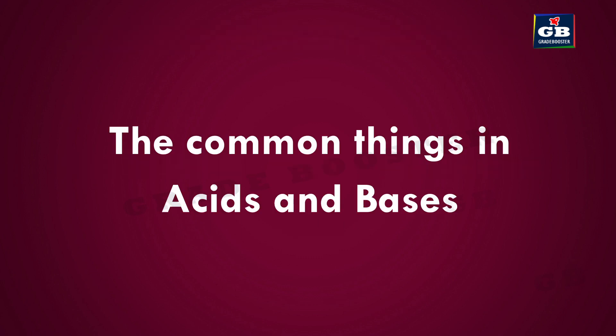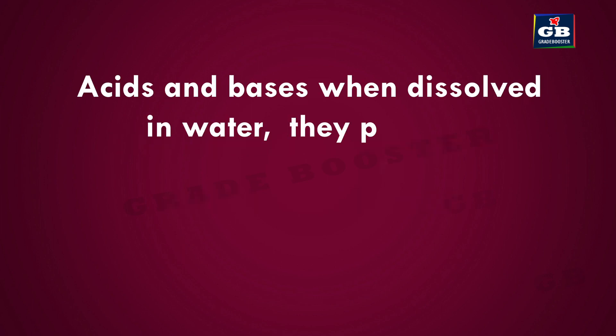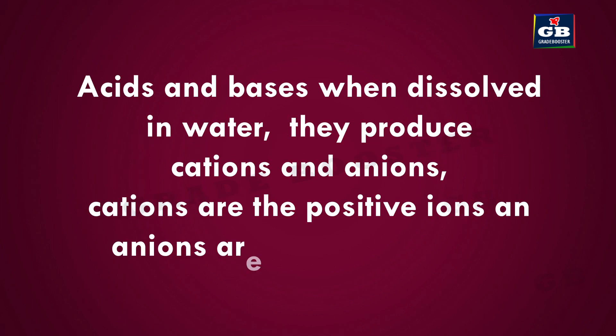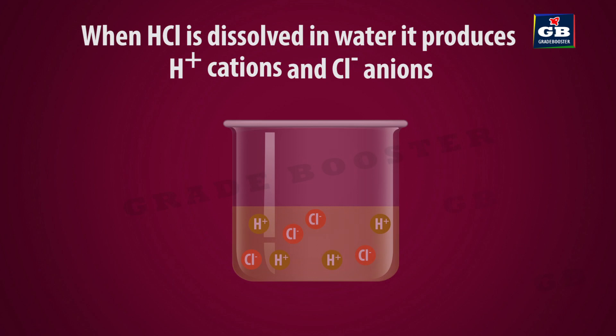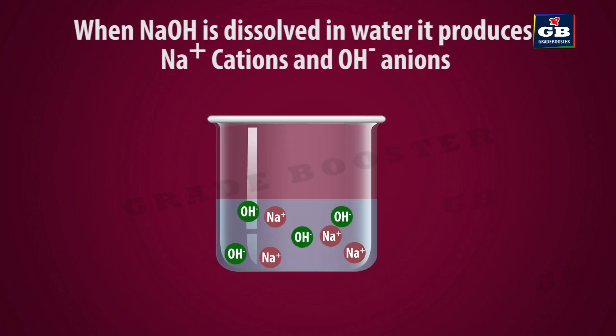The common thing in both acids and bases: when dissolved in water, they produce cations and anions. Cations are the positive ions and anions are the negative ions. When HCl is dissolved in water, it produces H⁺ cations and Cl⁻ anions. Similarly, if we dissolve sodium hydroxide in water, it forms Na⁺ cations and OH⁻ anions.